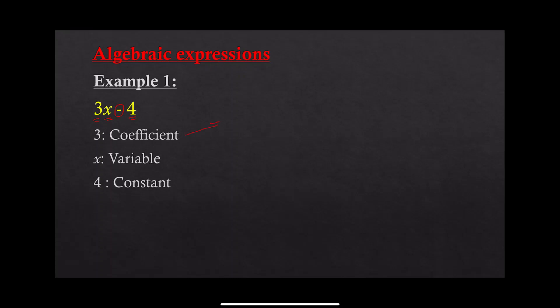The coefficient is the number that is multiplied by the variable. When I say 3x, it means 3 multiplied by x — there is a multiplication between 3 and the variable x. The number connected to or multiplied by the variable is the coefficient. The variable is a symbol like x, y, or any letter. The number alone is considered to be the constant.